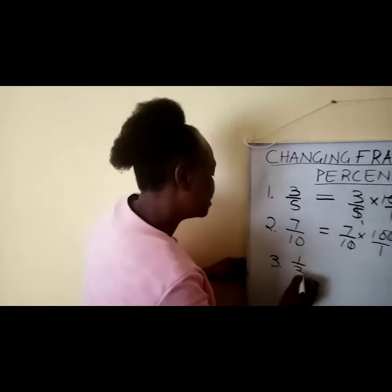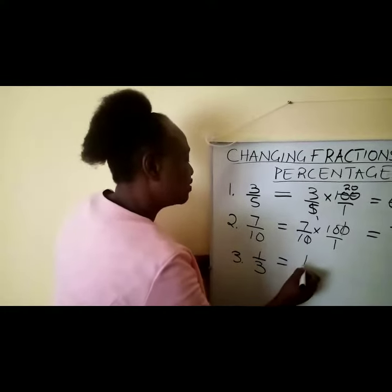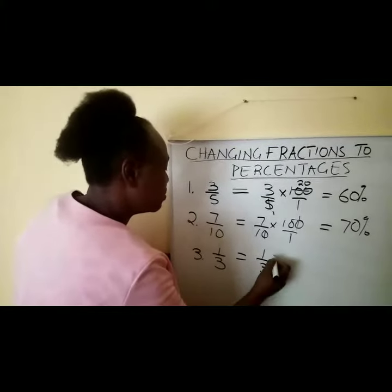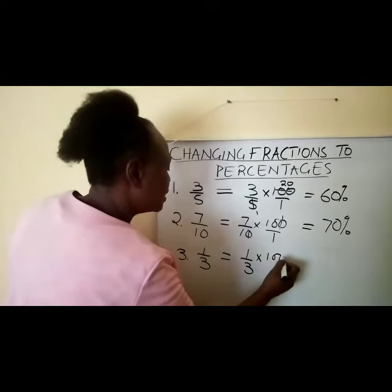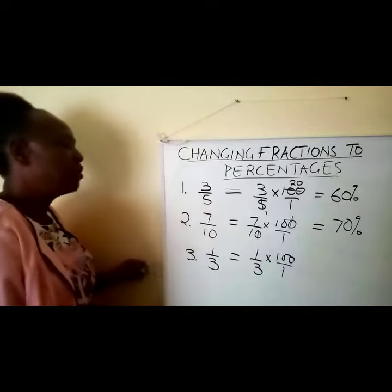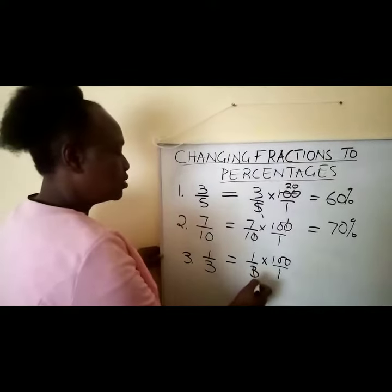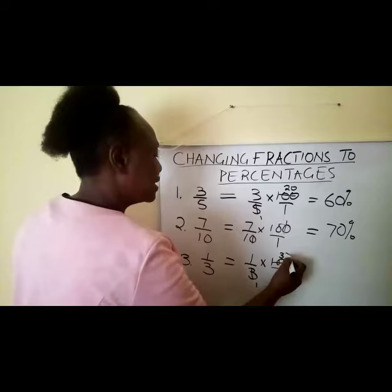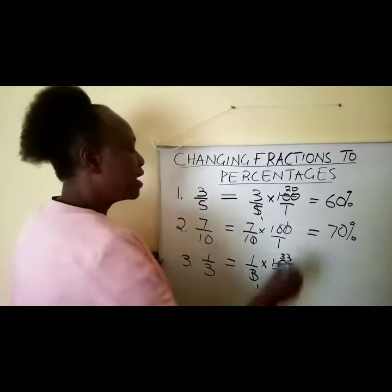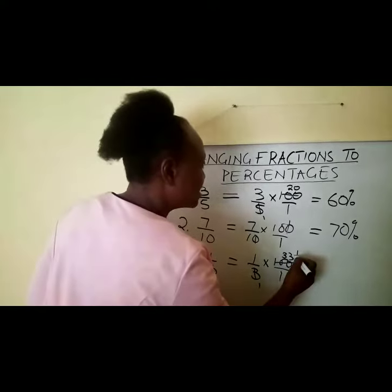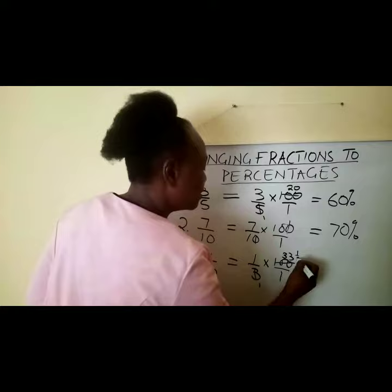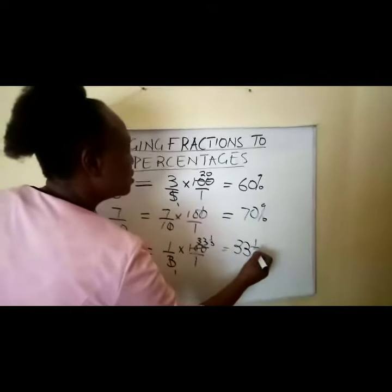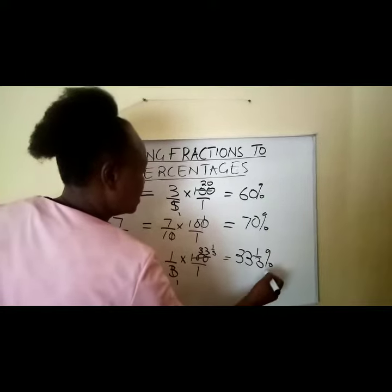Finally, we can take 1 third. This gives us 1 over 3 multiplied by 100 over 1. Now we try to divide 3 into 100 — that gives us 33 remainder 1, which gives us the 1 third. So this becomes 33 and a third percent.